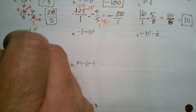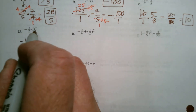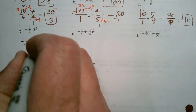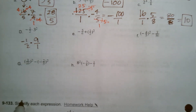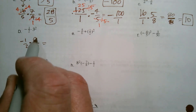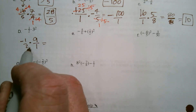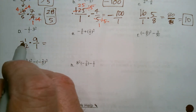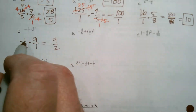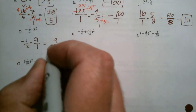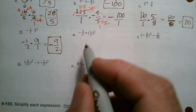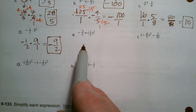Here we've got negative 1 half times 3 to the 2nd. 3 squared means 3 times 3, so it's 9. Put that over 1. I don't see any cross-reducing I can do, so I just multiply straight across. I have 9 halves, but it's a negative times a positive, so the answer is negative 9 halves.